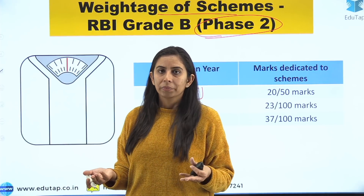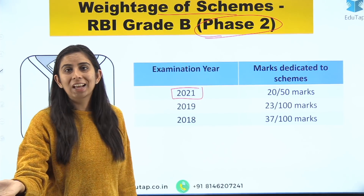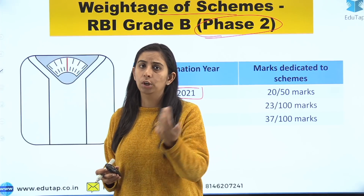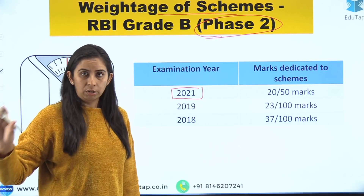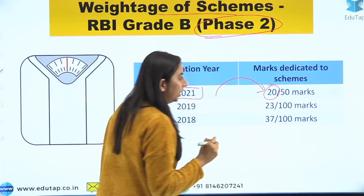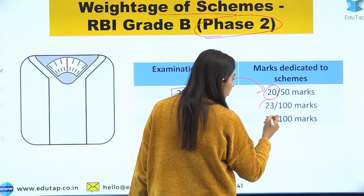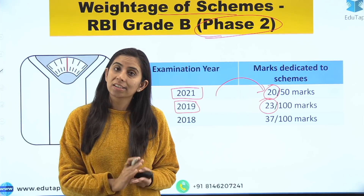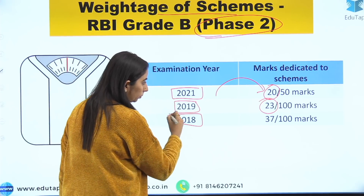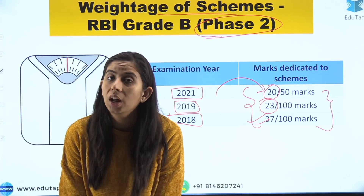You might assume that government schemes won't be directly asked in your descriptive paper, but you can obviously use them as fodder for writing. For example, if there's a question on the health sector and education sector of India, why not mention the wonderful government schemes being run? Now, focusing on your preparation: in 2021, 50-mark objective paper had 20 marks directly from government schemes. In 2019, the ESI paper of 100 marks had 23 marks on government schemes. In 2018, it was 37 marks.